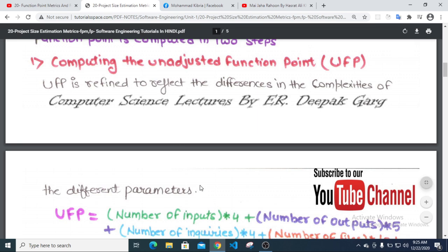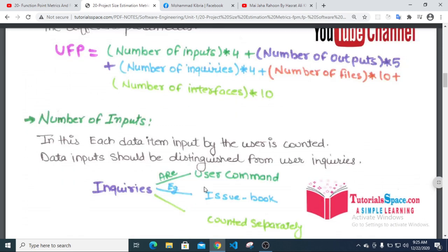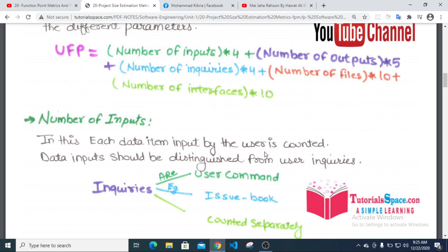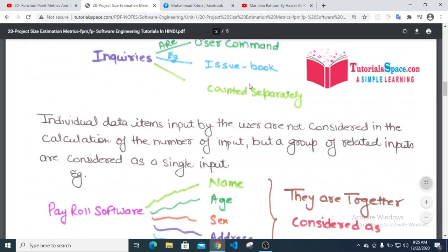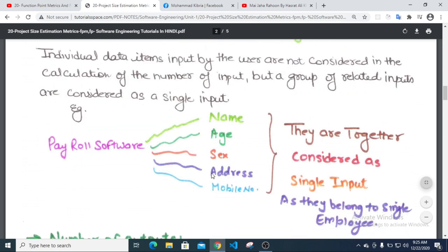Number of inputs: In this, each data item input by the user is counted. Data inputs should be distinguished from user inquiries. Individual data items input by the user are not considered in the calculation of the number of inputs, but a group of related inputs are considered as a single input.